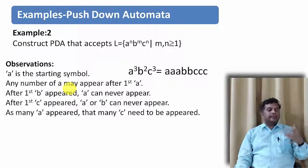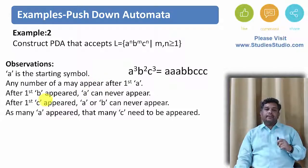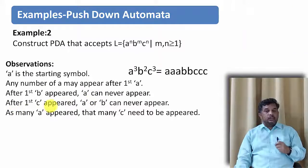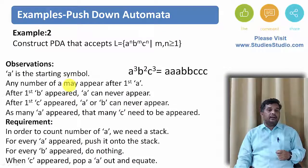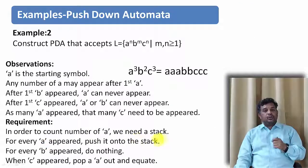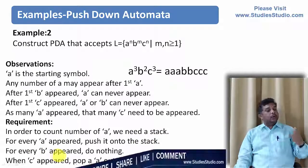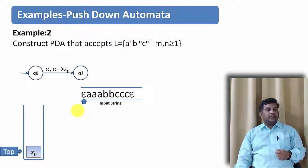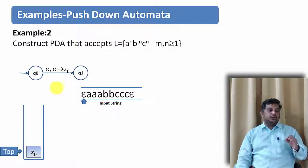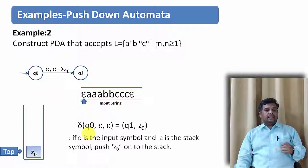The observation: a is the starting symbol. After the first a, more a's may appear. When the first b appears, no more a's can follow. When the first c appears, no more b's can follow. We need to match the count of a's to the count of c's. Requirements: use a stack to count a's — push every a onto the stack. For every b, do nothing. For every c, pop an a.